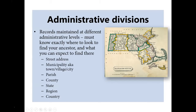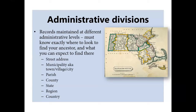One thing that goes into this is understanding different administrative divisions. Records are maintained at different administrative levels, so you must know where exactly to look to find your ancestor and what you can expect to find there. There are all these different levels of place name or location category, starting with the very small — the street address — going up through the municipality, the county, the state, and the country. There are a few others in between, such as the parish, which would apply to religious records and not civil records, and the region, which may or may not apply to any given record set.